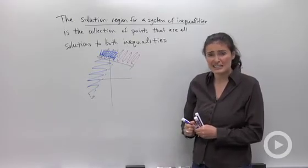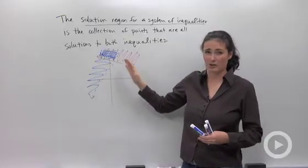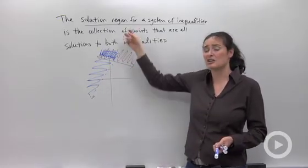So when you're doing these graphs, it's a good idea to get out your colored pencils because you're going to end up with lots of different shading overlaps. And if you just use pencil, sometimes it's hard to see your solution region.